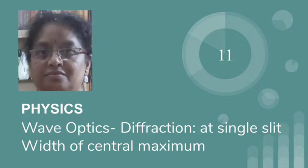This phenomenon of bending of light around the edge of the obstacle or aperture in the path of light is known as diffraction. The bending and penetration of light into the geometrical shadow portion is explained on the basis of Huygens' principle.